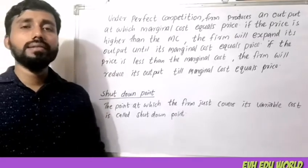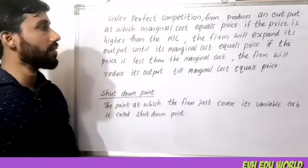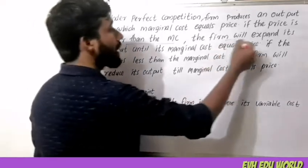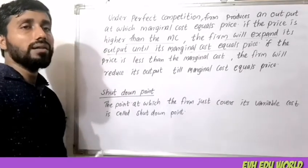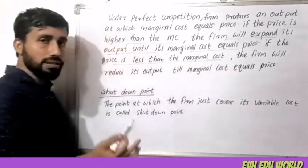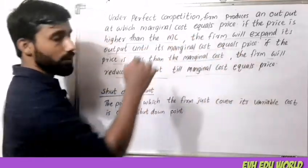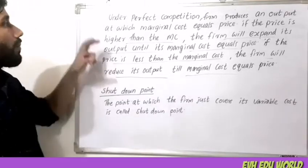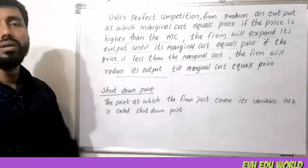In a perfect competition case, the price is equal to the firm's supply price. If the price is higher than the marginal cost, the firm will expand its output until marginal cost equals price. If the price is lower than the marginal cost, the firm will reduce its output until marginal cost equals price. So in perfect competition, the firm produces output at which marginal cost equals price.